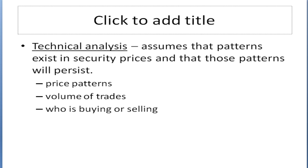The other approach is technical analysis. Technical analysis assumes that patterns exist in security prices and that those patterns will persist. There may be price patterns, patterns in the volume of trades, or signals in who's buying or selling. For example, if small investors are buying, there's an assumption that they're uninformed and usually buying at the wrong time, so you might choose to do the opposite. Or if insiders or market specialists on the exchanges are shorting more than usual, that may be a signal whether to buy or sell.